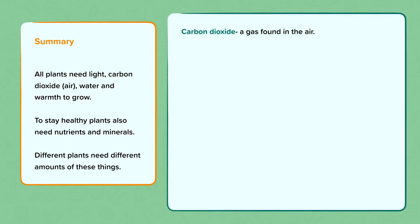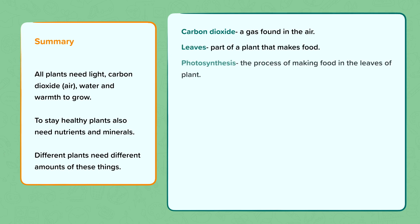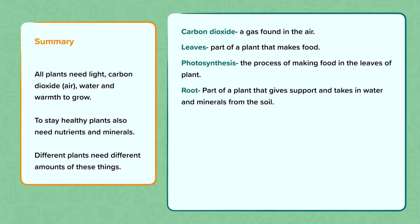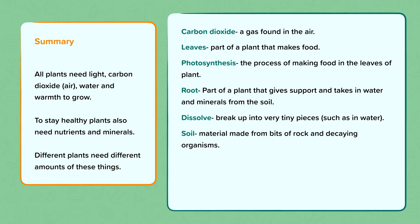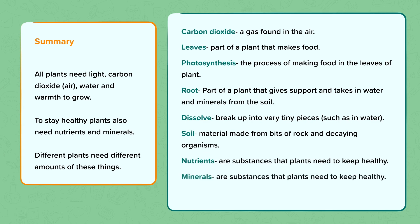The key words are: carbon dioxide, which is a gas from the air; leaves, which is the part of the plant that makes food; photosynthesis, which is the name of the process for making food in the leaves of a plant; root, which is the part of a plant that gives support and takes in water and minerals from the soil; dissolve, which means to break up into very tiny pieces such as in water; soil, which is a material made from bits of rock and decaying organisms; nutrients, which are substances that plants need to keep healthy; minerals, which are also substances that plants need to keep healthy; and fertiliser, which is a substance that can be added to the soil to add nutrients.